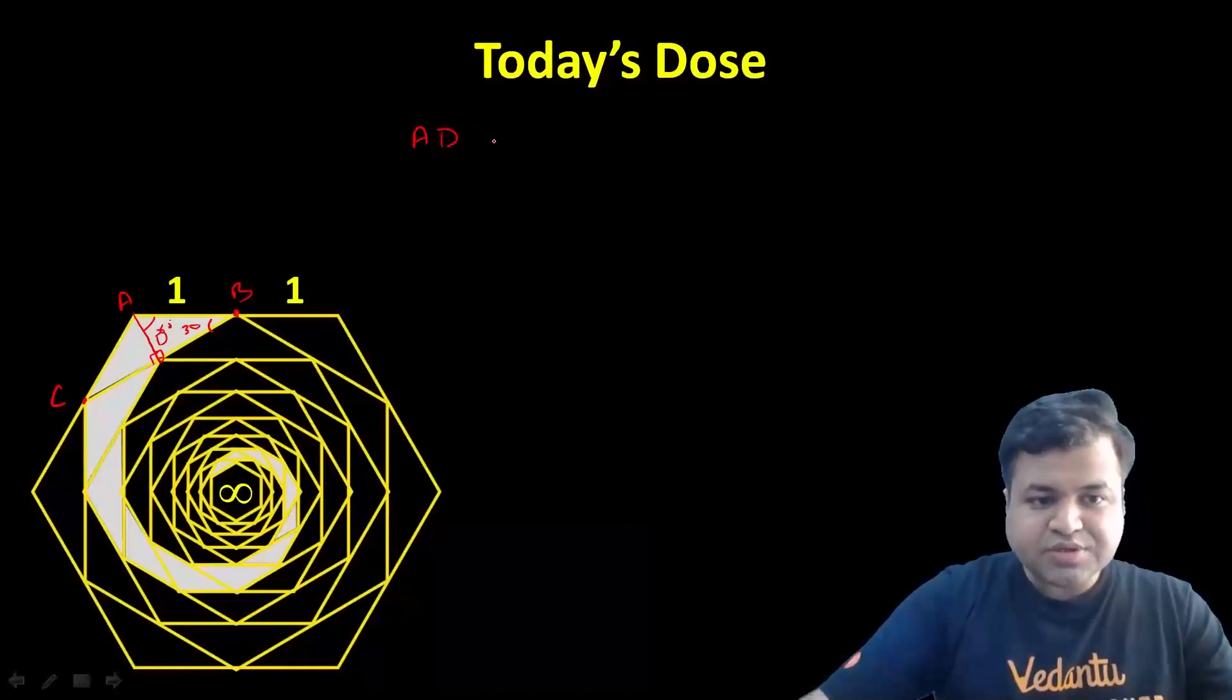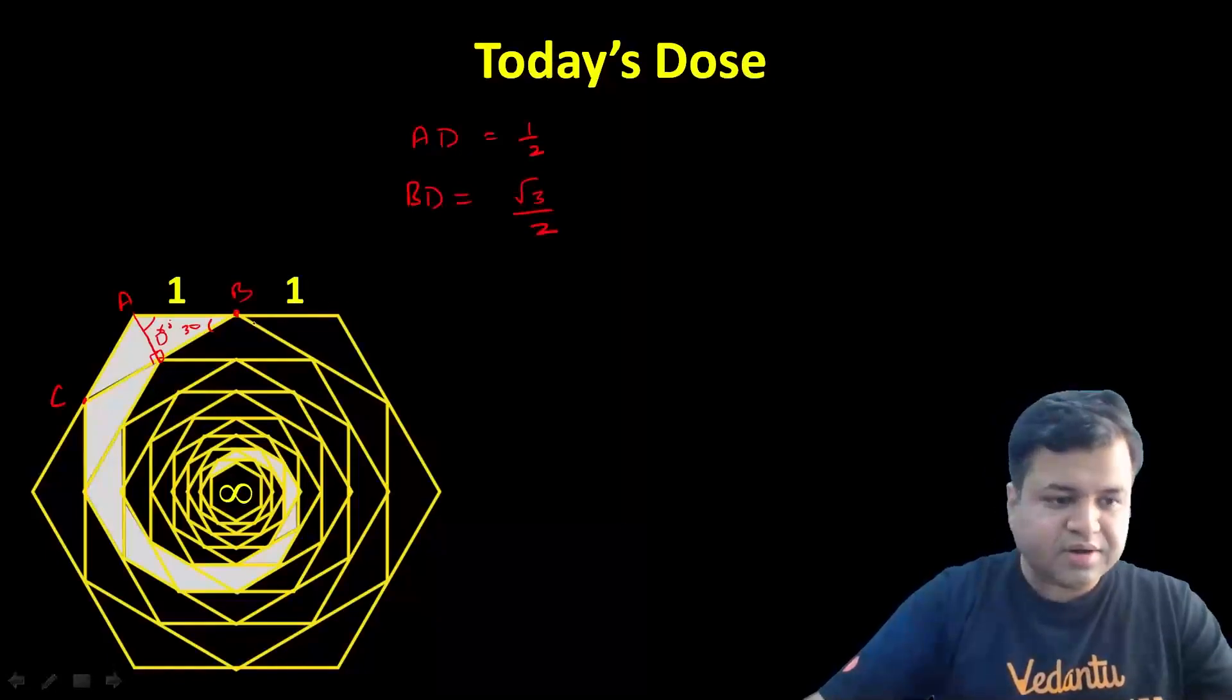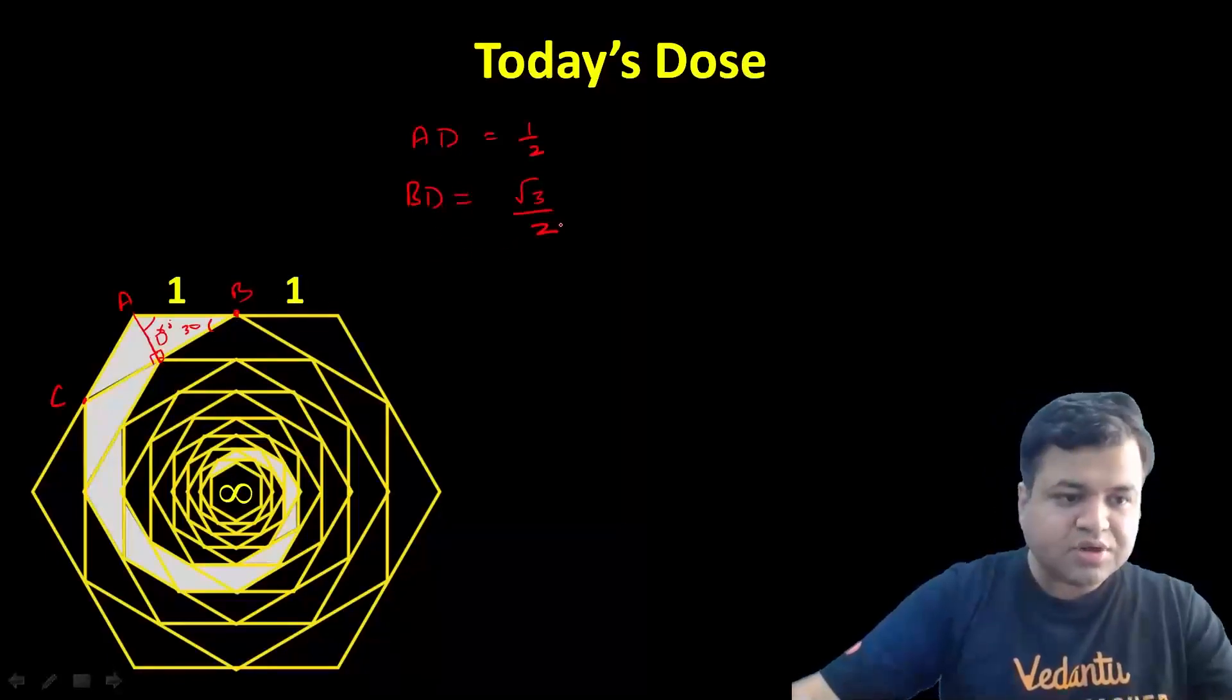AD should be half, and we can say that should be root 3 from Pythagoras or trigonometry. So AD is half and BD is root 3.